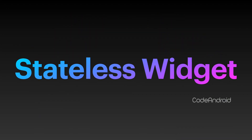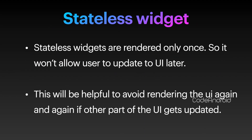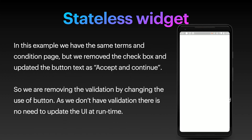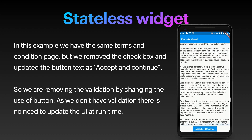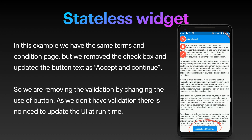Now we'll see about StatelessWidget. StatelessWidgets are rendered only once, so we can't update part of the UI without recreating the entire UI. This will be helpful to avoid re-rendering the UI again and again if other parts of the UI get updated. We took the same example but removed the checkbox and updated the button text as Accept and Continue. By doing this, we are removing the validation required for the checkbox. As we removed the validation, there is no need to update the UI at runtime. So according to our UI need, we can choose the widget type.